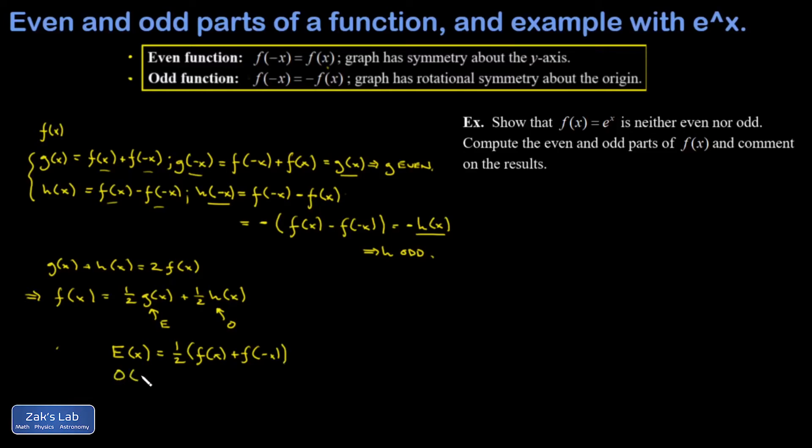And the odd part of my function is one half times the quantity f of x minus f of negative x. And you can check real quick that if you add this even and odd part you get back to the original function f of x. So any function could be decomposed into even and odd parts by using these little formulas.